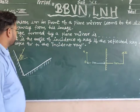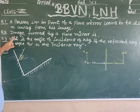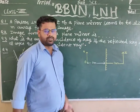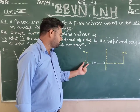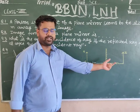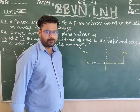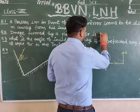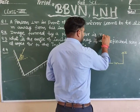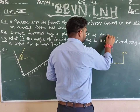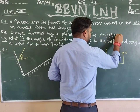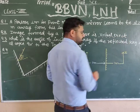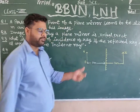Next question: the image formed by a plane mirror is — virtual. The image formed by a plane mirror is a virtual image. It is erect and the same size as the object.